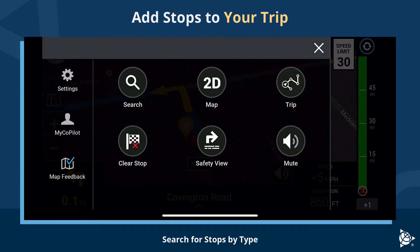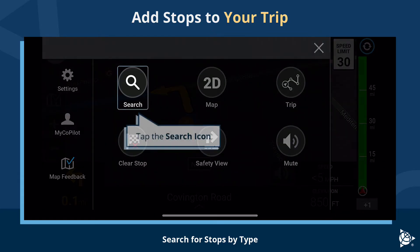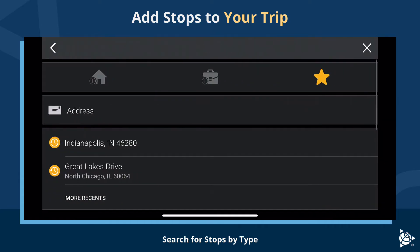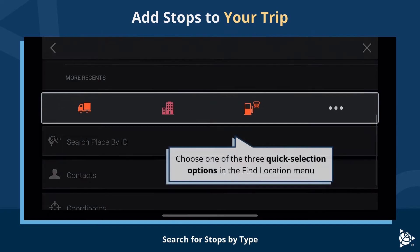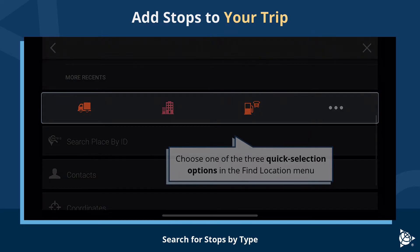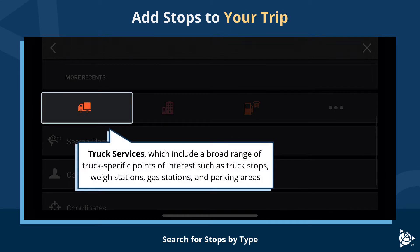Search for stops by type. Tap the search icon and choose one of the three quick selection options in the Find Location menu. The first is Truck Services, which includes a broad range of truck-specific points of interest, such as truck stops, weigh stations, gas stations, and parking areas.